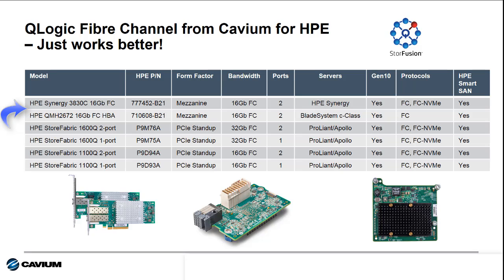The HPE Synergy 3830C and the HPE QMH 2672 mezzanine adapters provide 16GB fiber channel connectivity for the HPE Synergy and HPE Blade System C-Class platforms respectively. The HPE StoreFabric SN1600Q HPAs are PCIe adapters and provide 32GB fiber channel connectivity for HPE ProLiant DL, ML, and Apollo servers. The HPE StoreFabric SN1100Q is a 16GB fiber channel version for these rack and tower servers.